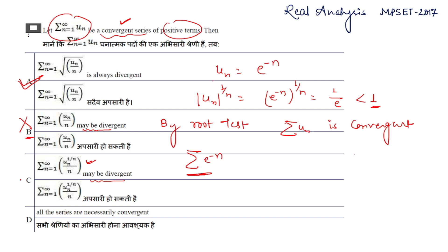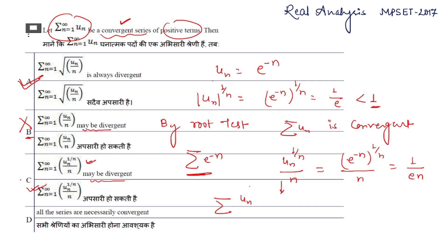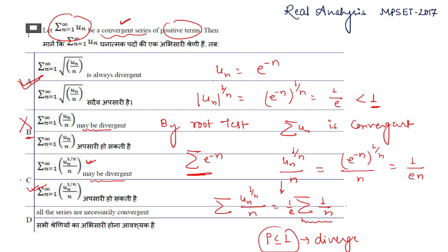Now constructing option C's series with this example: uₙ^(1/n)/n = (e^(−n))^(1/n) / n = (1/e) / n = 1/(en). Since 1/e is a constant and Σ1/n is a p-series with p = 1 ≤ 1, it diverges. So this series is divergent.